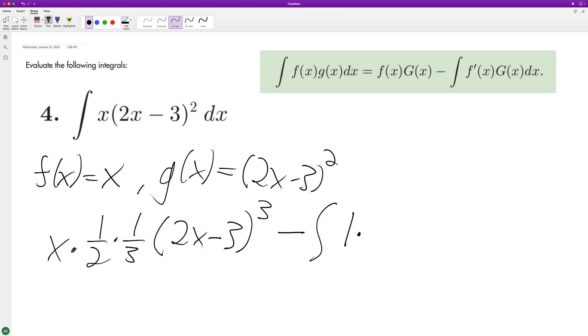Times the integral, so same thing again, except it's going to be 1 sixth because I'll just multiply those together, 2x minus 3 cubed.